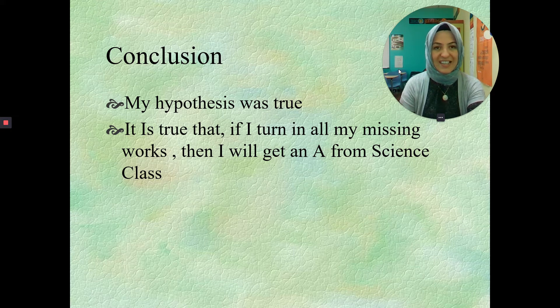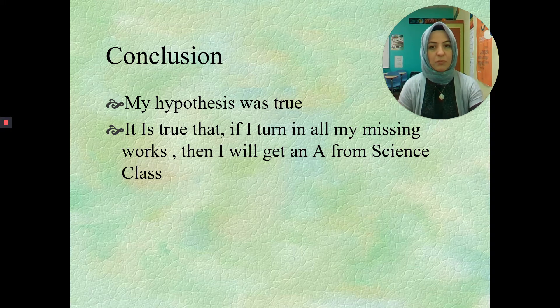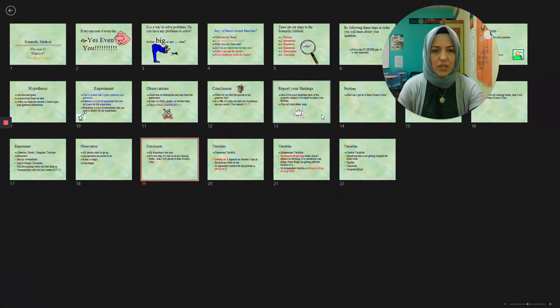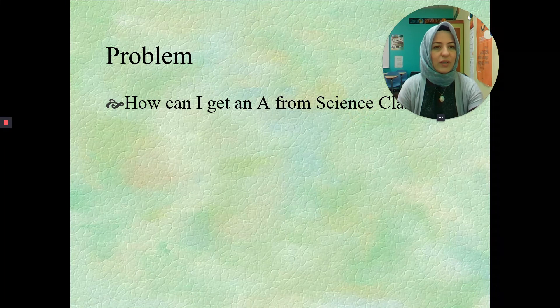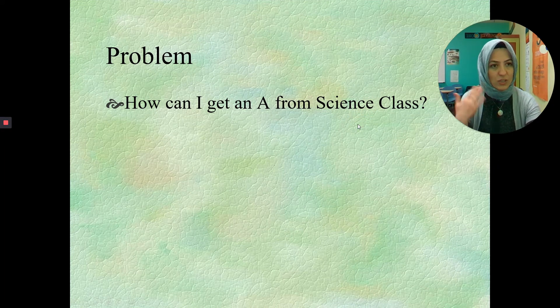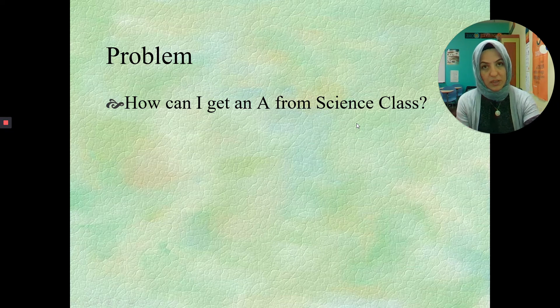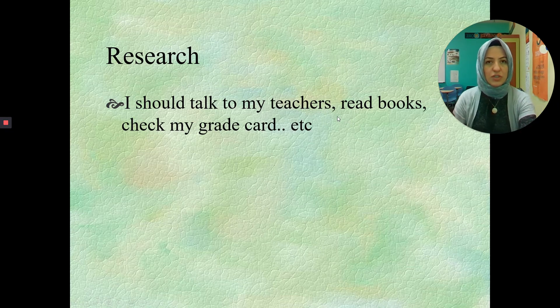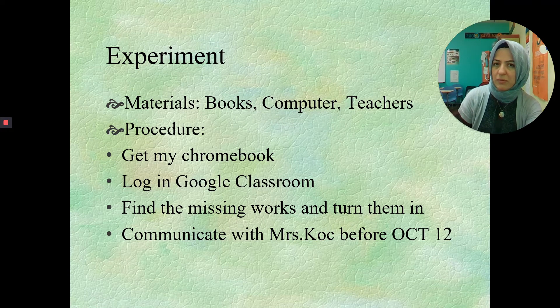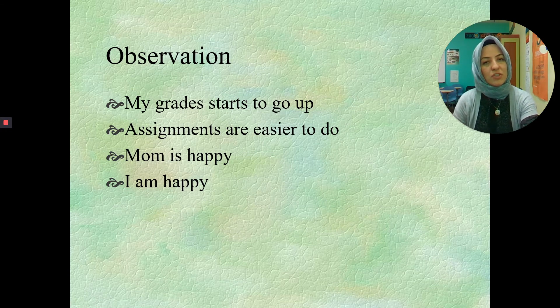Well now, in this video, you are going to be seeing the variables of my problem. Let's go to my problem. What was my problem? Here is my problem. How can I get an A from science class? This was the problem that we've been working on the whole time. We had our research, we had the hypothesis, we had the experiment and observation and conclusion.